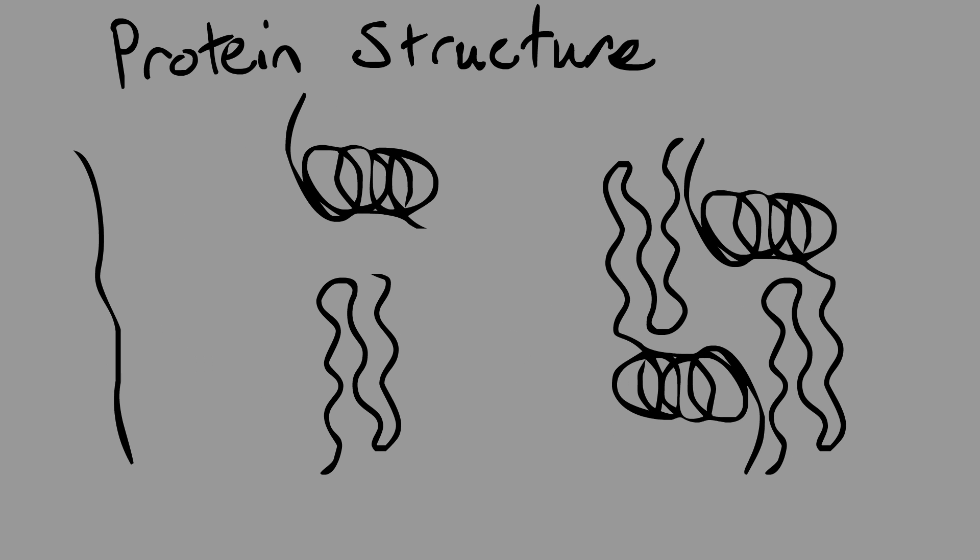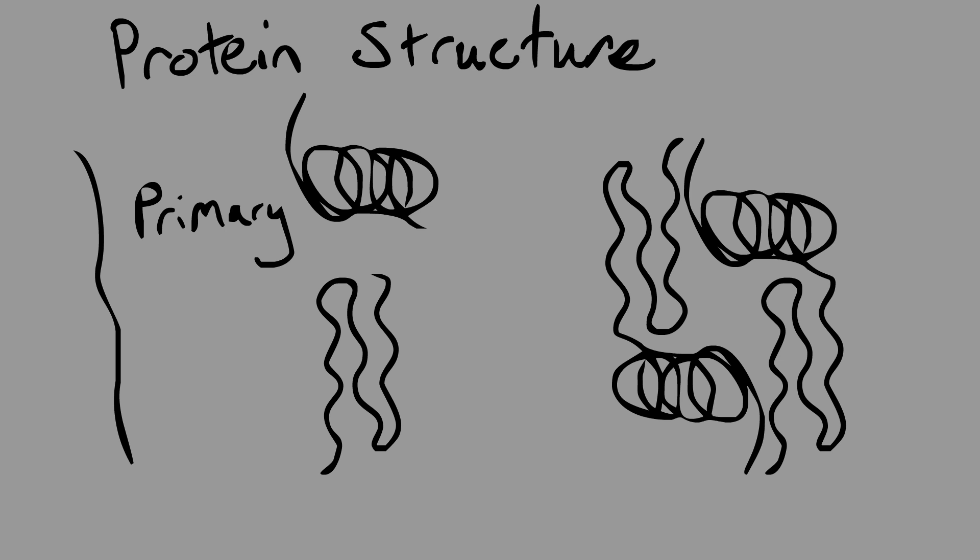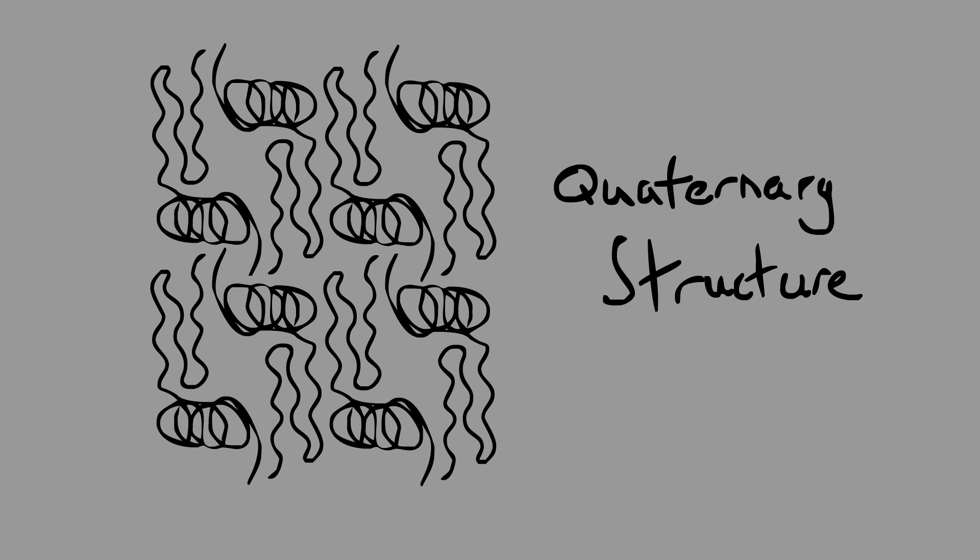Protein structures can be broken down into four categories. Primary, which is just the stretch of amino acids. Secondary, the alpha and beta pleated sheets. The tertiary, which is a combination of these secondary structures. And the quaternary structure, which is an amalgamation of these tertiary structures in a 3D formation, making what most people consider a full protein.